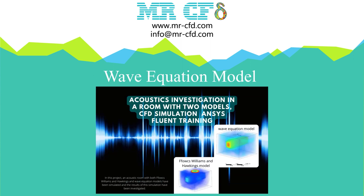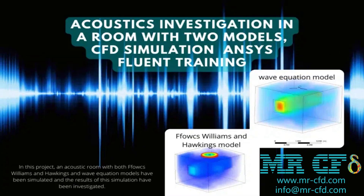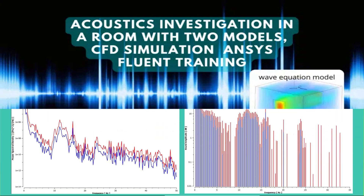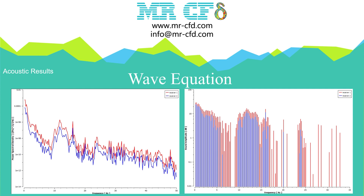The wave equation model is used in this project. In this CFD simulation, an acoustic room with both FWH and wave equation models has been simulated and the results investigated. At the end of the solution process, 2D and 3D contours and plots related to room pressure, temperature, velocity, and other parameters are obtained. CFD-Post software draws room sound pressure and amplitude plots at different points defined in ANSYS Fluent. The temperature and velocity in the room are shown by 3D contours, and parameters related to generated noises are achieved both on the fan walls and the room environment.